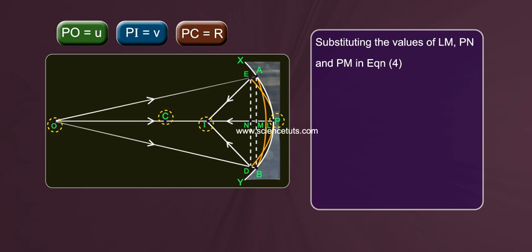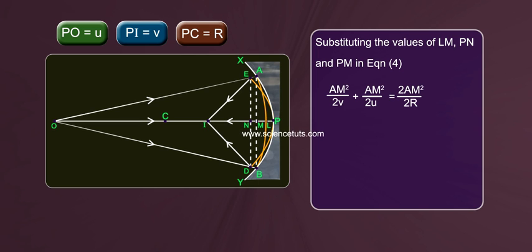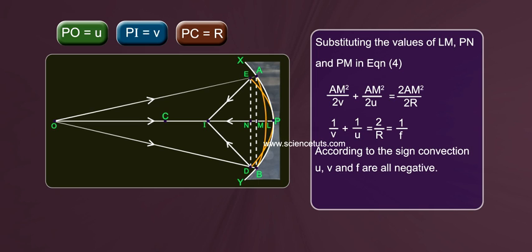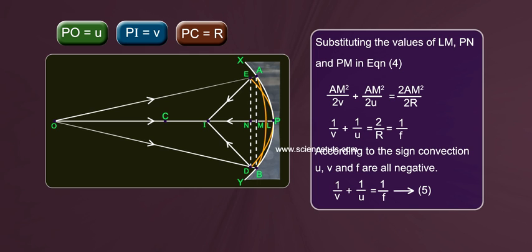Substituting the values of LM, PN, and PM in Equation 4: AM squared by 2V plus AM squared by 2U equals 2 times AM squared by 2R. This simplifies to 1/V plus 1/U equals 2/R equals 1/F. According to the sign convention, U, V, and F are all negative, giving the mirror formula: 1/V plus 1/U equals 1/F — Equation 5.